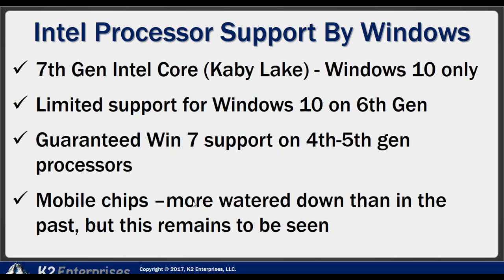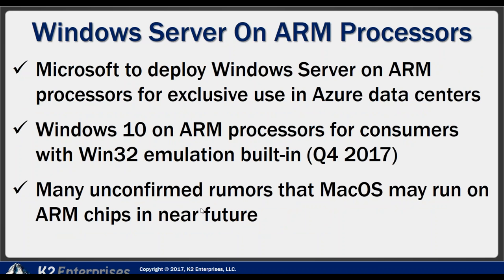Stepping back to Intel: the 7th Gen Intel processors called Kaby Lake only support Windows 10, with limited backwards support. Windows 7 support is guaranteed only on older 4th and 5th Gen chips. The availability of hardware is now going to drive what we can support on the software side — we're getting forced into Windows 10, Mac OS, or Linux on higher-end chips. Microsoft has also said they expect to deploy Windows Server on ARM chips for their Azure data centers this year, and they've announced Windows 32 emulation late in the year on these simpler processors.